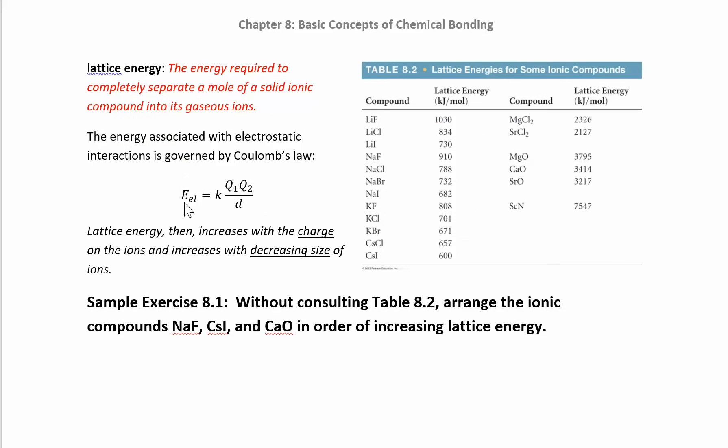Coulomb's law is over here. If you've taken physics, you've probably seen this before. This is the electrostatic energy, the electrostatic interaction. Q1 and Q2 are the charges. For sodium chloride, Q1 would be plus one, and Q2 would be minus one. Then the D is the distance between them. If you have really small atoms, they're not going to have a lot of distance between them, and they'll have a higher energy. If you decrease the bottom number, the one on the denominator, that's going to make the energy increase.